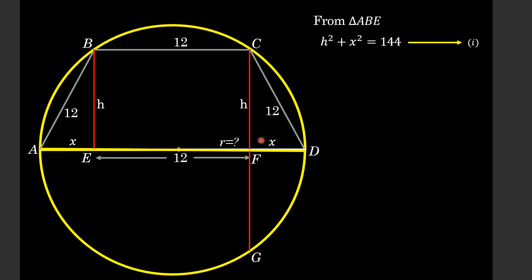The length of line segment FG is also equal to h. It is actually equal to CF and this is also equal to h.